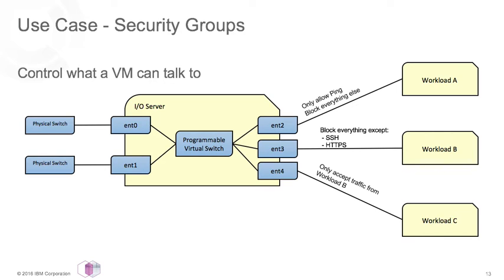In this example, workload A only has a rule that allows pings to work to it. Workload B only allows SSH or HTTPS traffic, but blocks everything else. Workload C will only accept traffic from workload B, though it will accept any type of traffic from workload B. PowerVC's default security group allows everything to talk to everything — be sure to swap in your own security group when you deploy a VM. You can also change security groups after deployment, and those rules will be updated across your environment instantly.